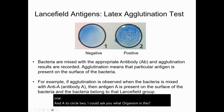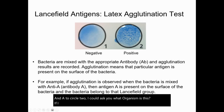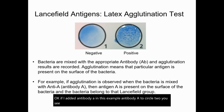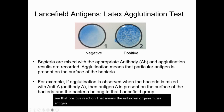If I added antibody A to circle two and you see that positive reaction, that means the unknown organism has antigen A, so it belongs to group A.